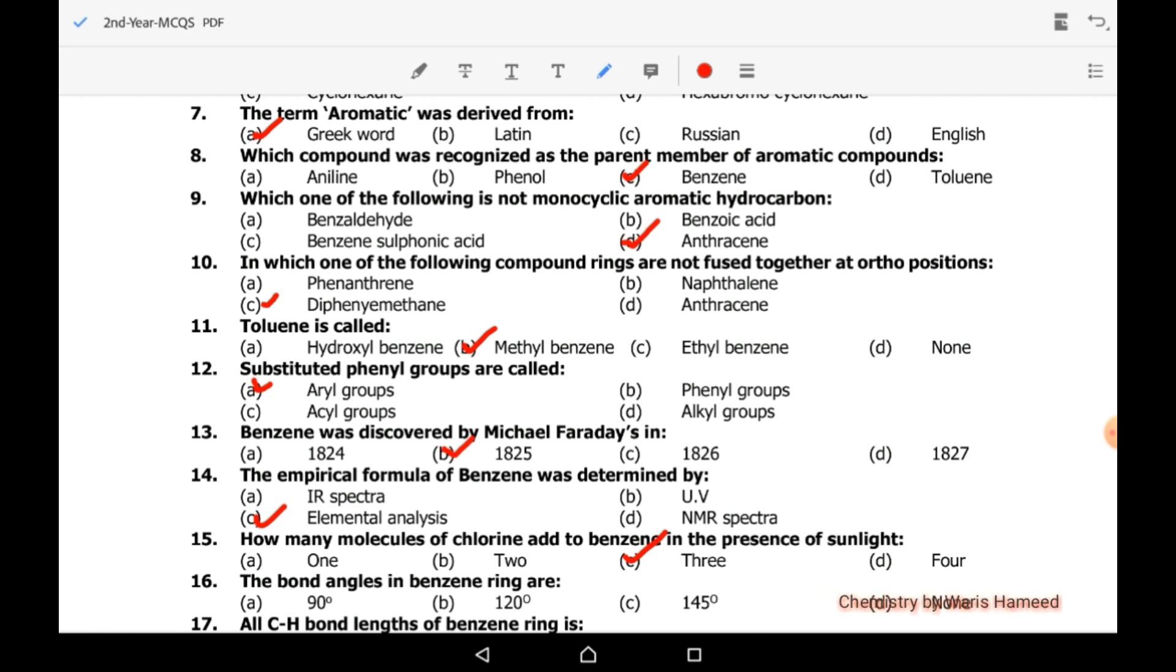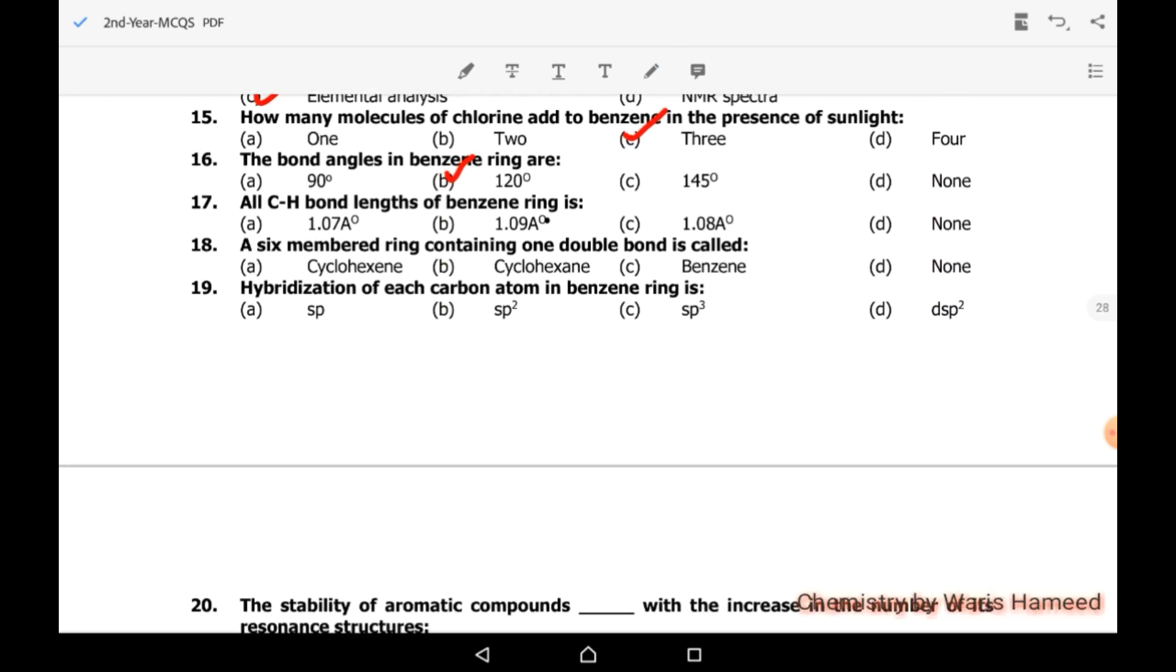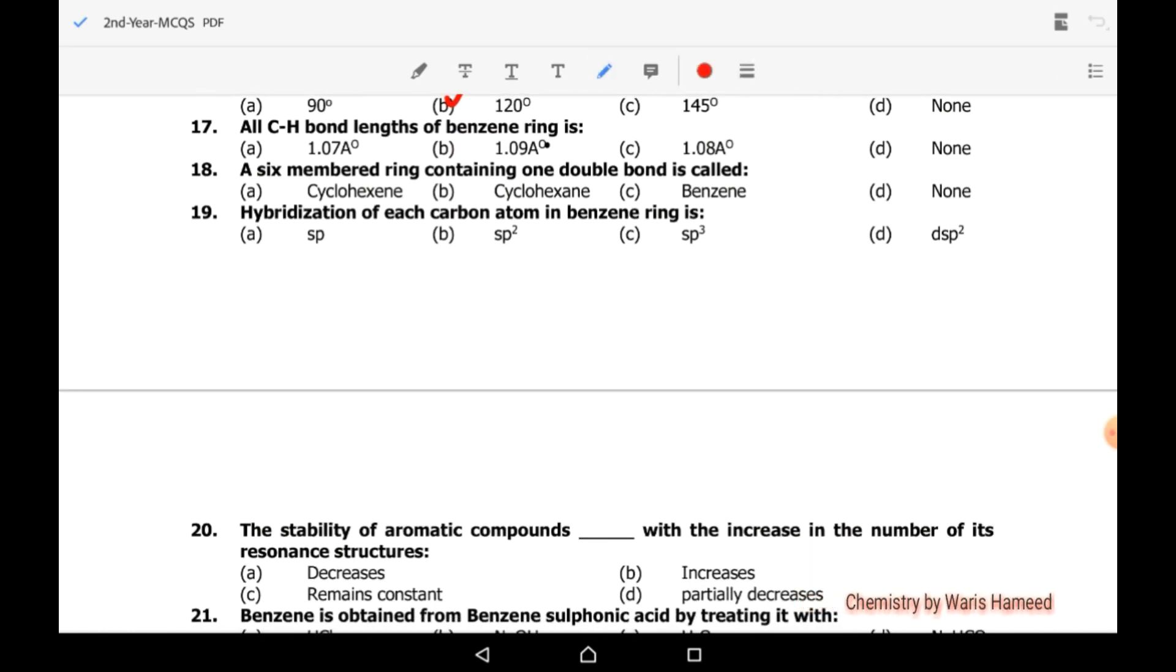The bond angle in benzene ring: all carbons are sp2 hybrid, so they are planar and their bond angle is 120 degrees. All C-H bond lengths of benzene ring are 1.09 angstrom. A six-membered ring containing one double bond is called cyclohexene. Hybridization of each carbon atom in benzene ring is sp2 hybrid.